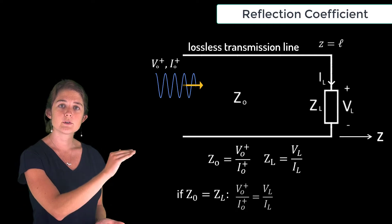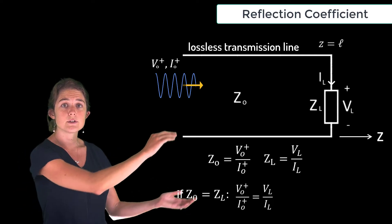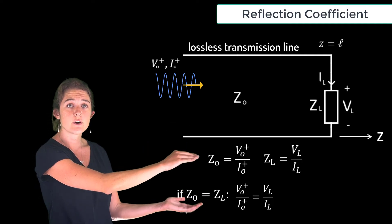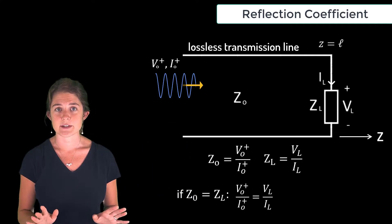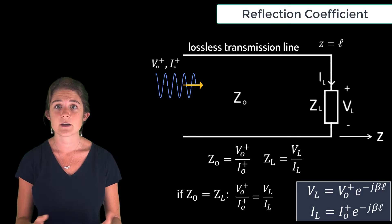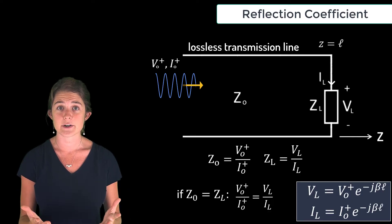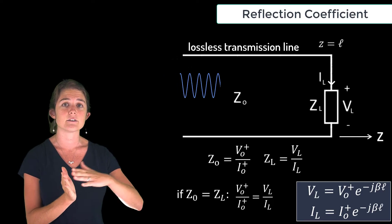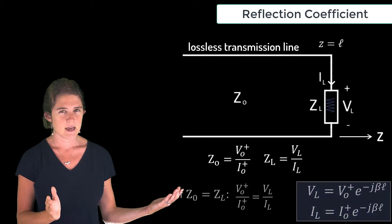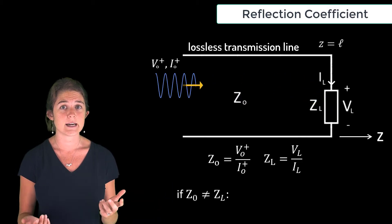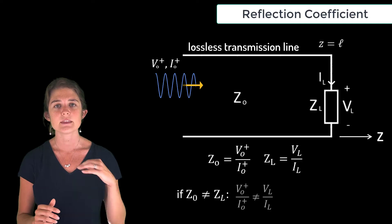If z0 and zL are equal, then the ratio of forward voltage to forward current is equal to the ratio of total voltage to total current, and this works out perfectly. The total voltage is just a forward voltage wave, the total current is just the forward current wave, and the entire signal is transferred to the load.